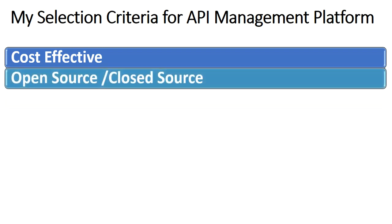The second important criterion is whether this API management platform is open source or closed source. The first point on cost effectiveness also directly relates to this second point, because if you opt for an open source platform, you don't have to pay anything for the license — so licensing cost is minimized or completely eliminated from the list.